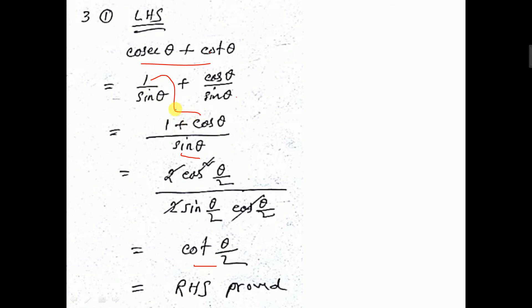Now, apply the 1 plus cos θ formula: 2cos²(θ/2). And the sin θ formula: 2sin(θ/2)cos(θ/2). The 2s cancel and one cos(θ/2) cancels, so we get cos(θ/2) by sin(θ/2), which is cot(θ/2). That is equal to the right hand side.